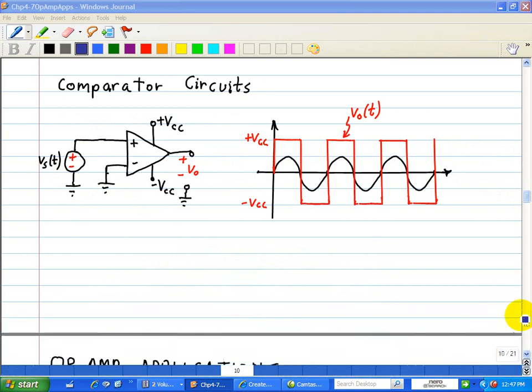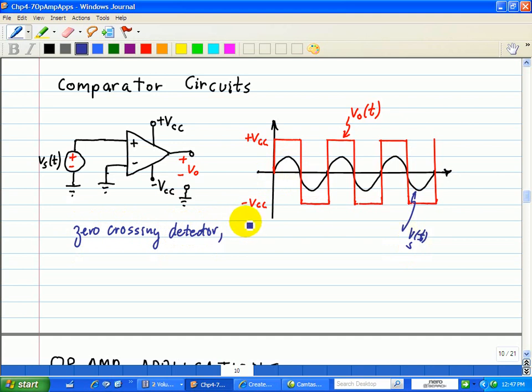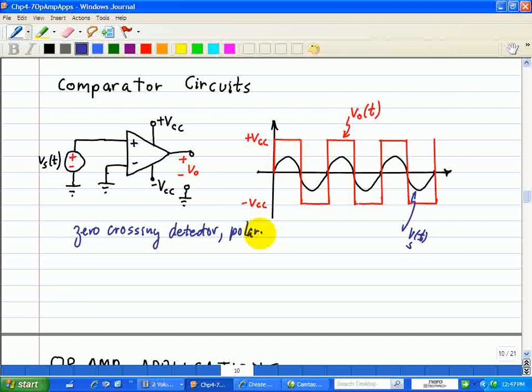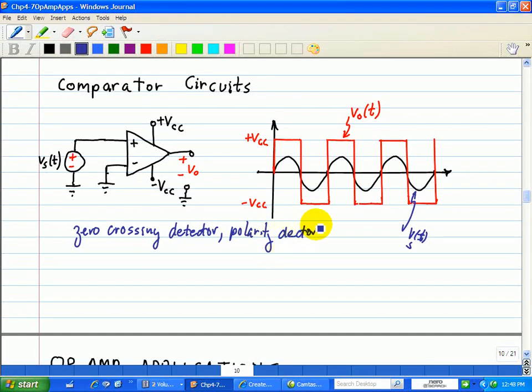So let's look at another example of how a comparator circuit is used. Let's say we ground our inverting input to ground, and VST is connected to the non-inverting input. This is called a zero crossing detector. It's also called the polarity detector.